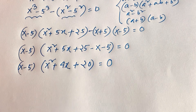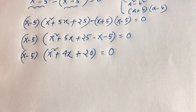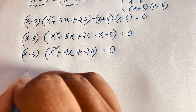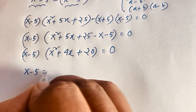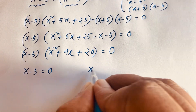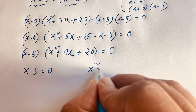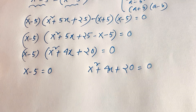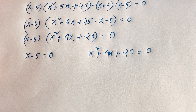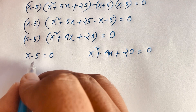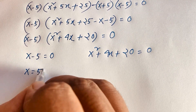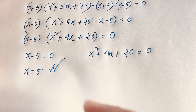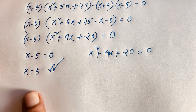This gives us two equations. The first case is x minus 5 equals 0, which gives x equals 5. This is the real solution to this Math Olympiad question. The second equation is x² + 4x + 20 equals 0, which produces complex roots.